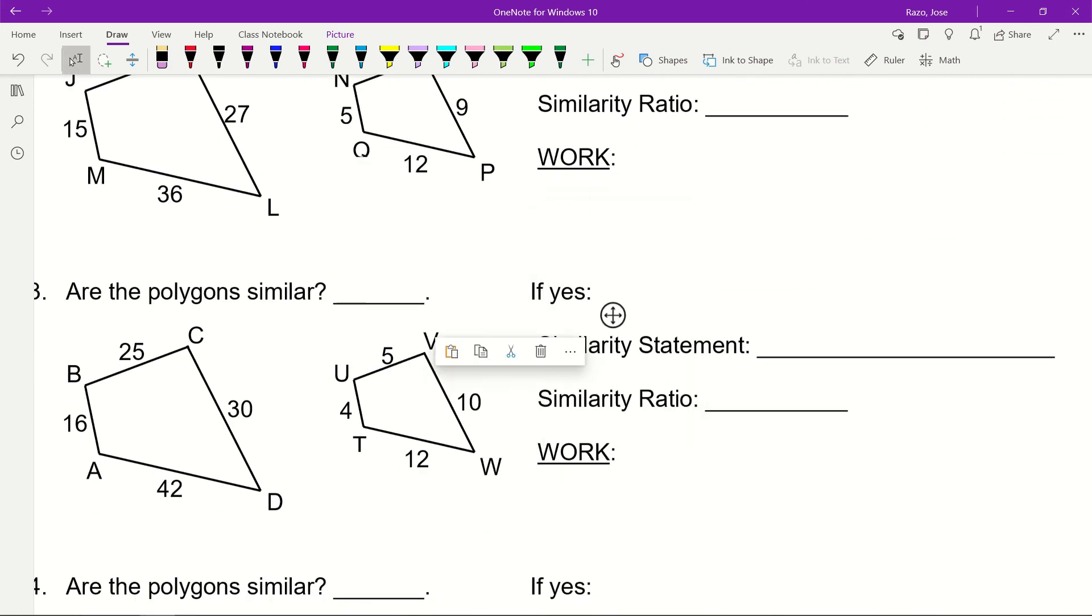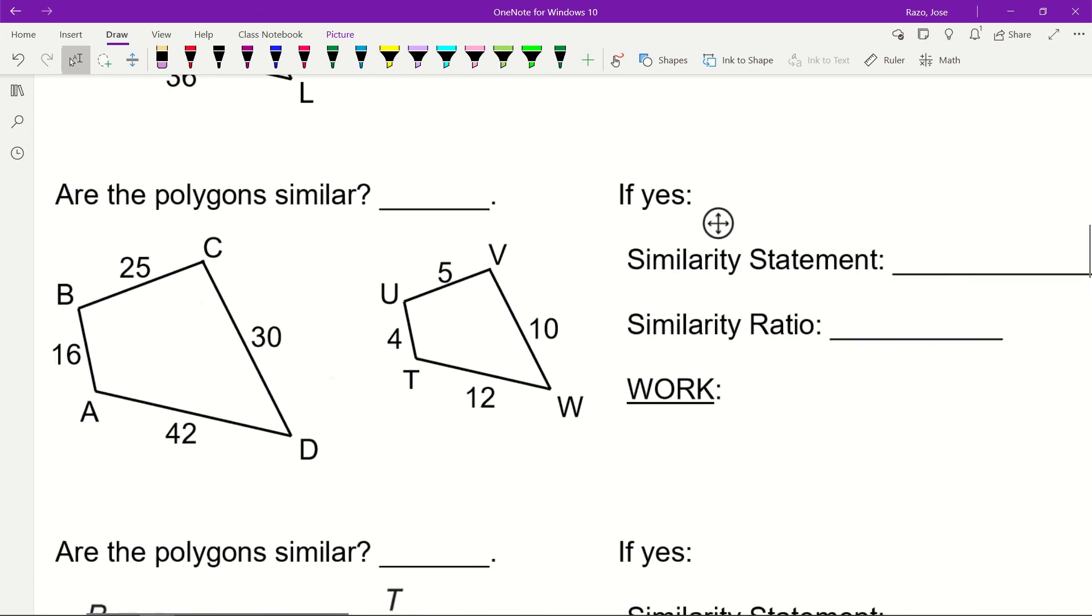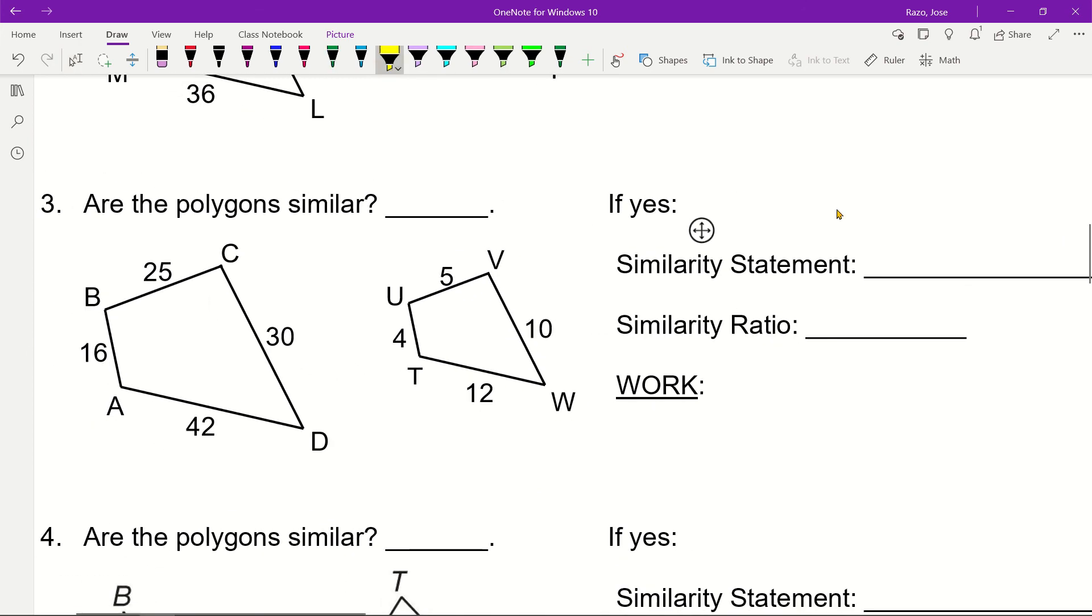Number three. Let's identify BC and UV - they're facing the same direction. I'm going to have BC over UV, which is 25 over 5. If you reduce it, it becomes 5 over 1.